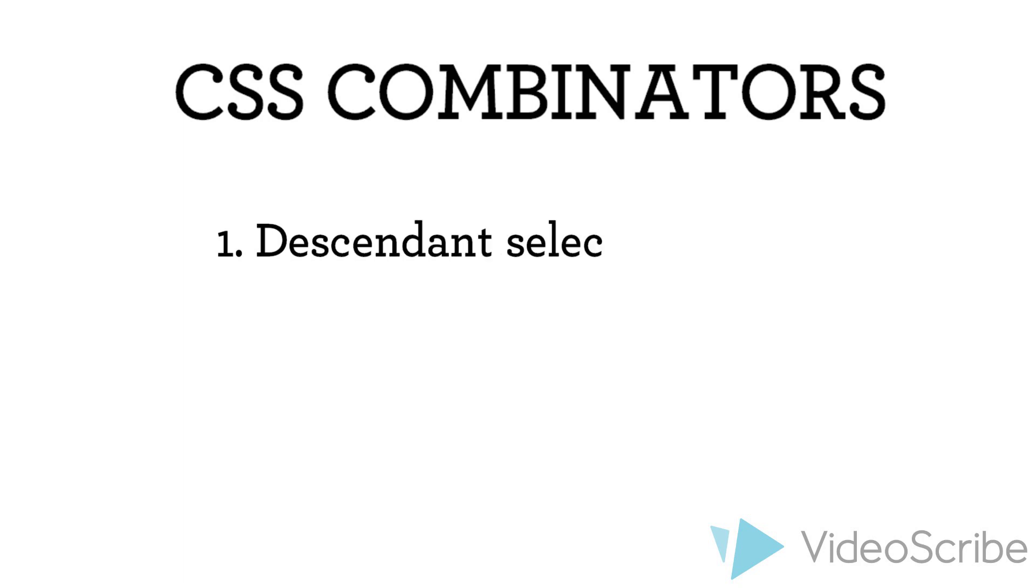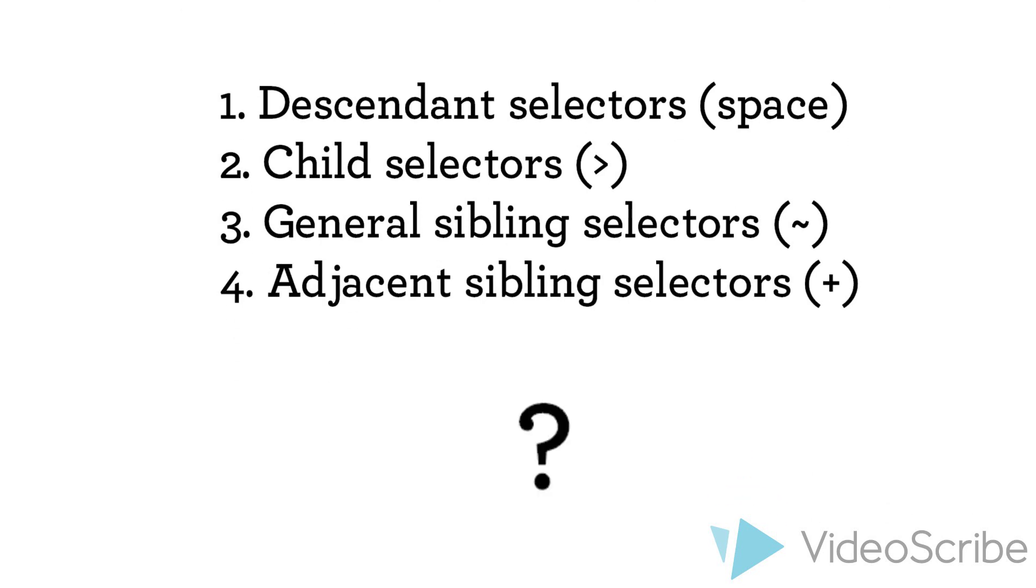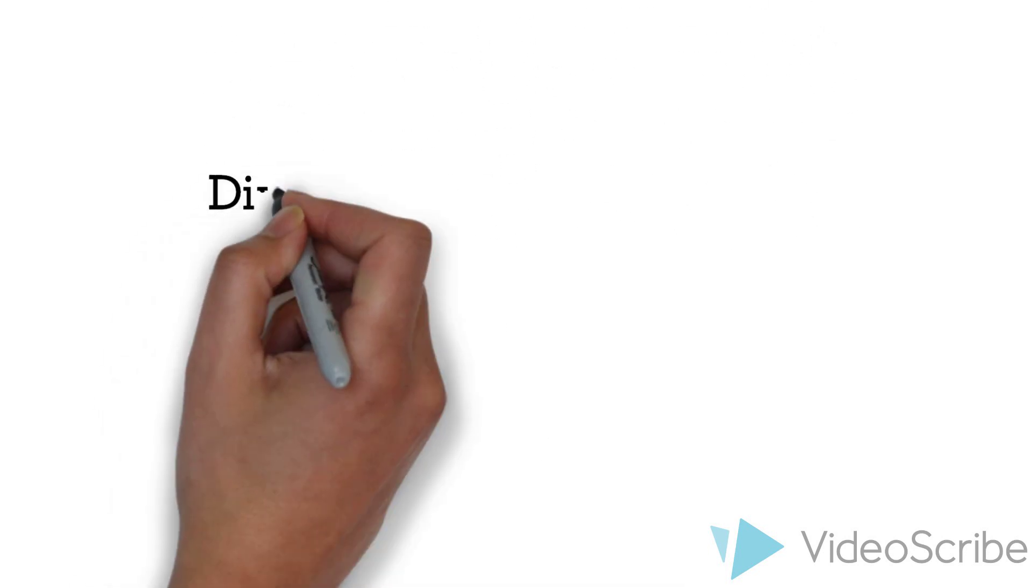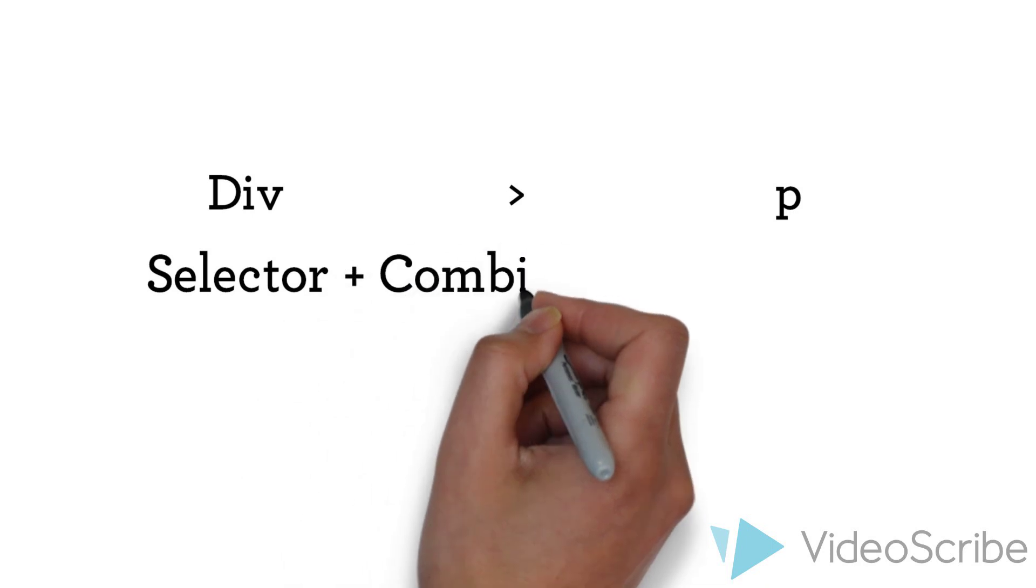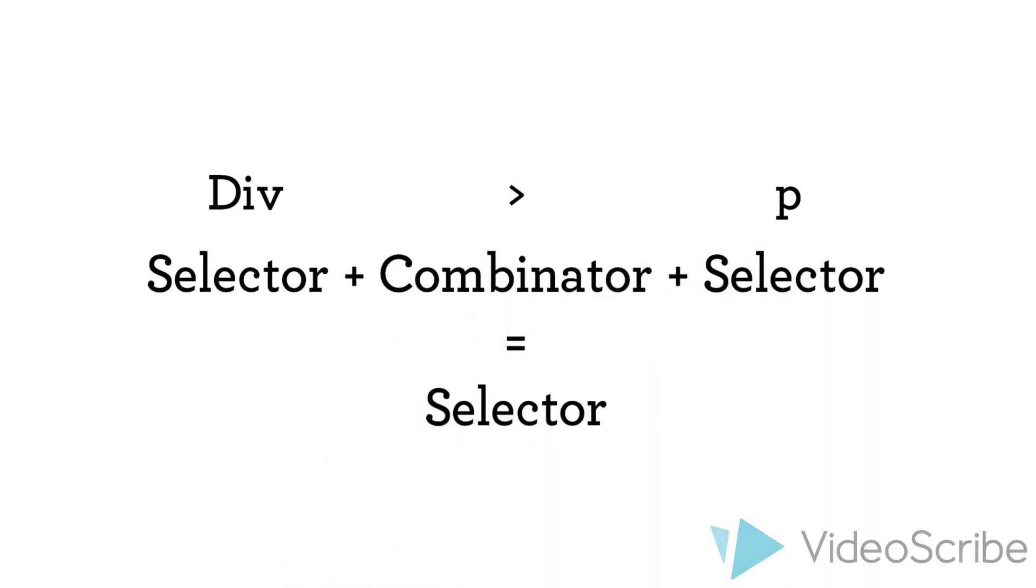Descendant selectors, child selectors, general sibling selectors and adjacent sibling selectors. But why are they called selectors in this list? That's because their function is to combine simple selectors. But as a whole they are just selectors as well. Just a bit more complicated ones.